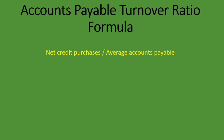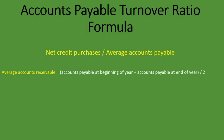So net credit purchases is whatever we purchased during this period, and then we divide that by average accounts payable. Other formulas might use accounts payable rather than average accounts payable — that is just a variation of the formula. Average accounts payable is calculated as accounts payable at the beginning of the year plus accounts payable at the end of the year, divided by two.